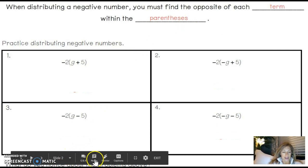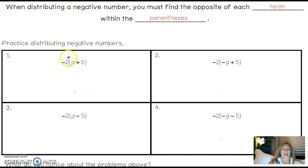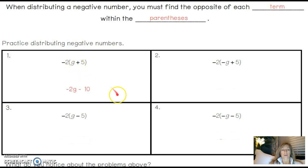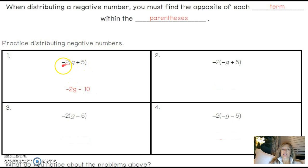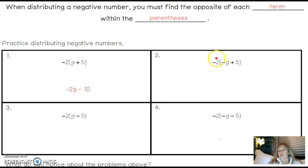Let's practice that right now. I have negative 2 and I'm distributing it to G and then to 5. The first thing we need to do is identify the opposites. G is positive, so my answer is going to be negative. 5 is positive, so when I'm done distributing it will be a minus sign between them. This gives us negative 2G, because negative 2 times G is negative 2G, and 2 times 5 is 10 — the opposite of plus is negative — so it's minus 10.